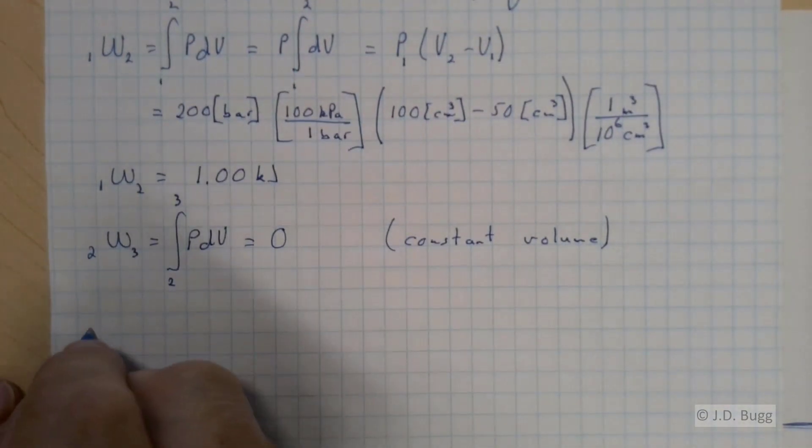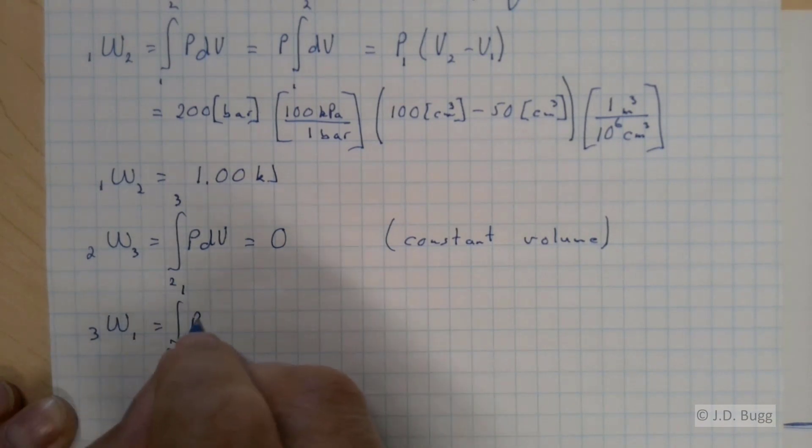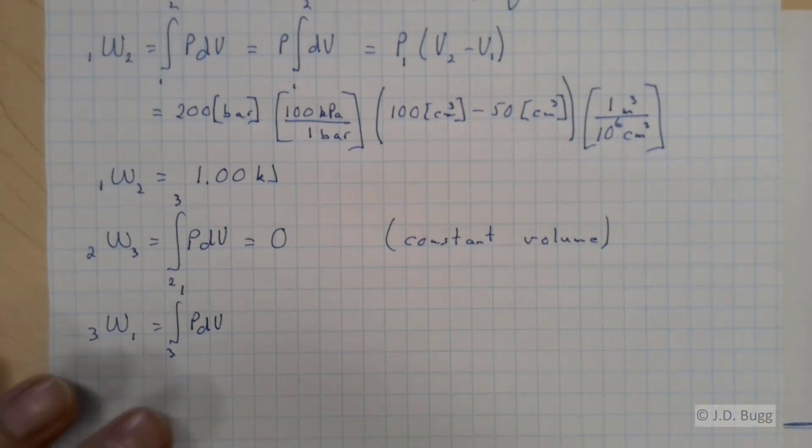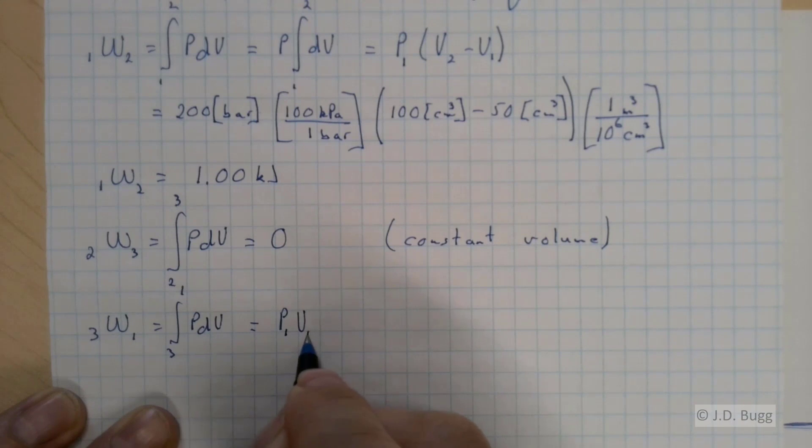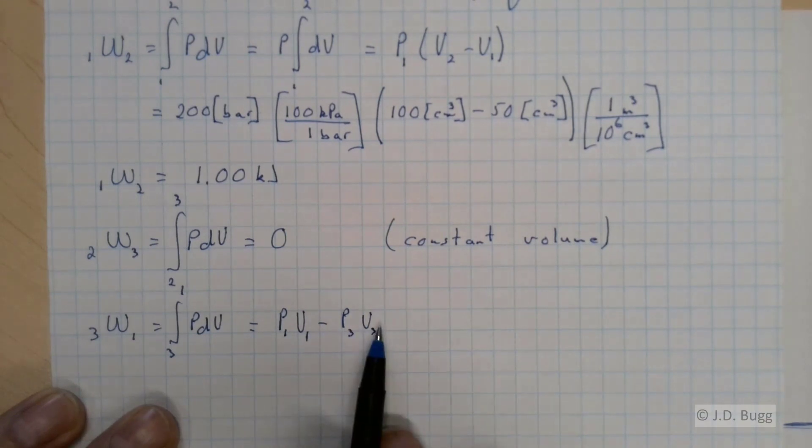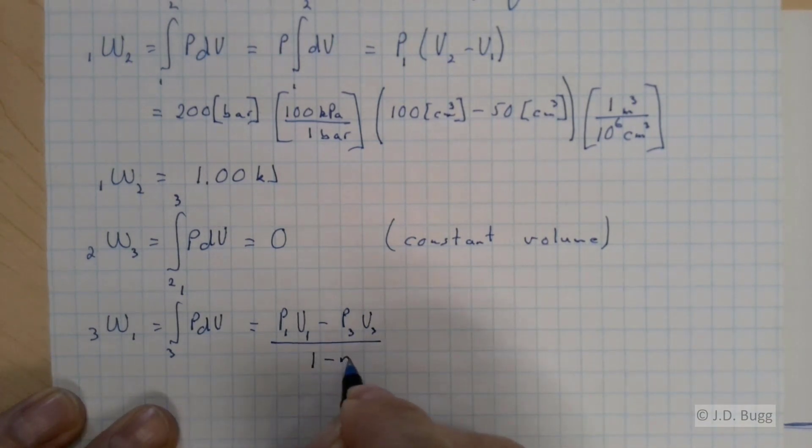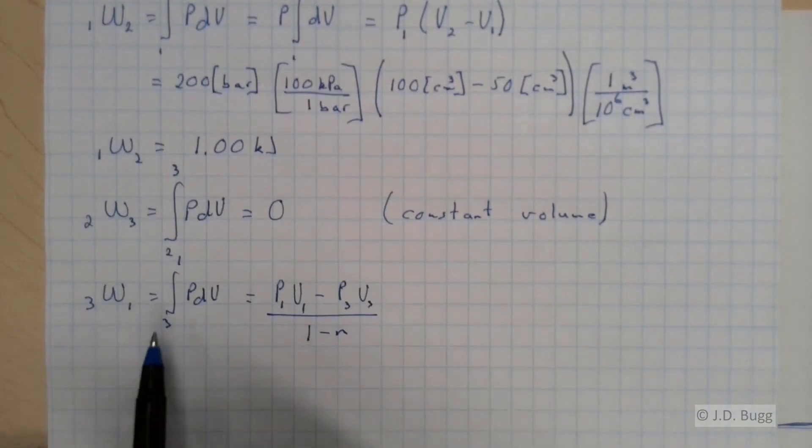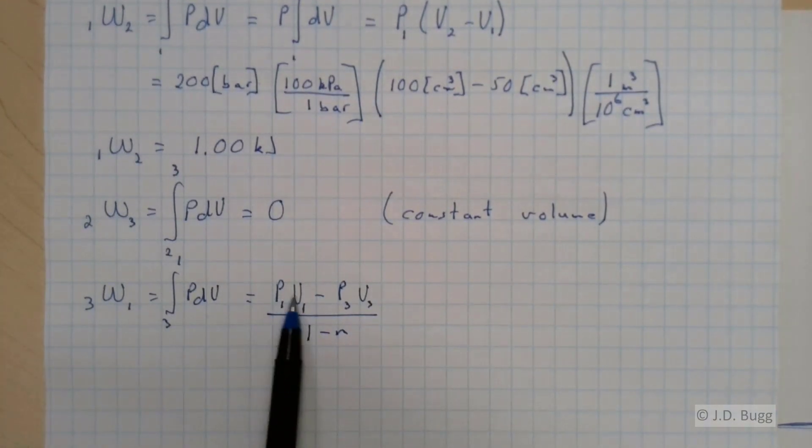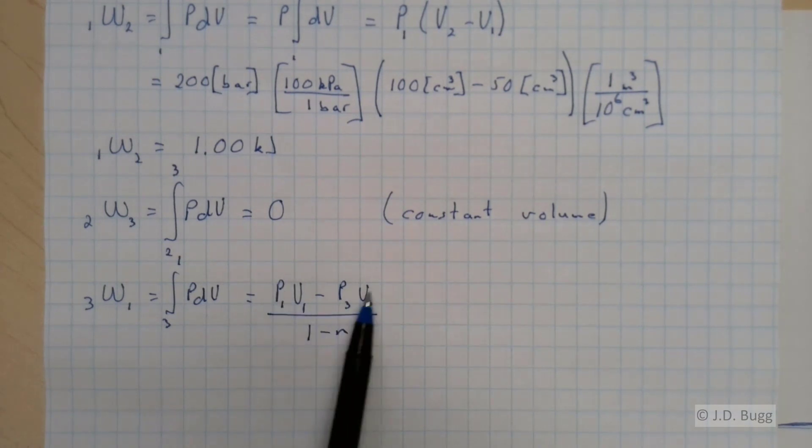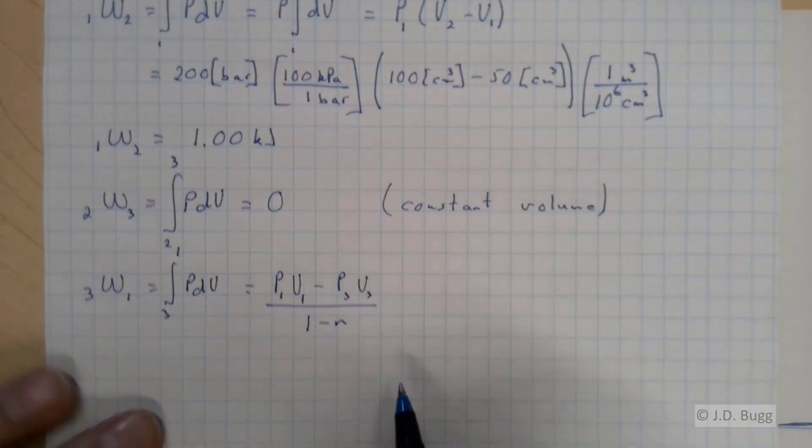Last process, 3 to 1, is the integral PDV from 3 to 1. And this is a polytropic process. So the work for a polytropic process is P1 V1 minus P3 V3 divided by 1 minus N. So that's our equation for work. Now, we know all of these pressures and volumes from the problem description. The issue we have is we don't know N. So we need N.